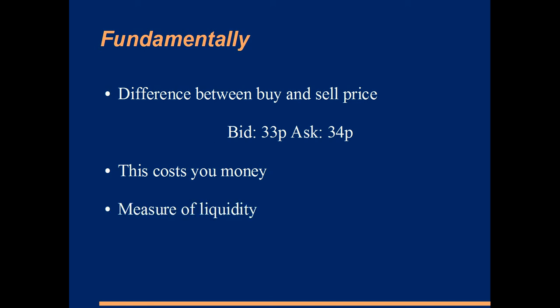In addition, the bid-ask spread is a measure of liquidity. Very illiquid stocks — that's stocks that don't trade very much — have a very wide bid-ask spread, so the brokers can make more money. Whereas a stock like General Electric, which trades in huge volumes, will almost always have an extremely small spread between the bid and ask prices, because it's turning over so much volume, so the brokers are making huge amounts of money on that volume.